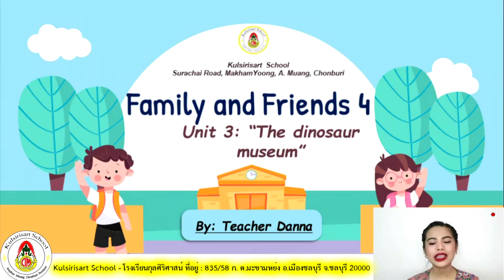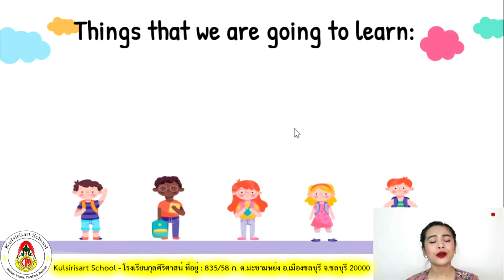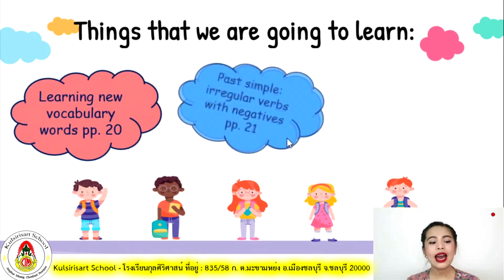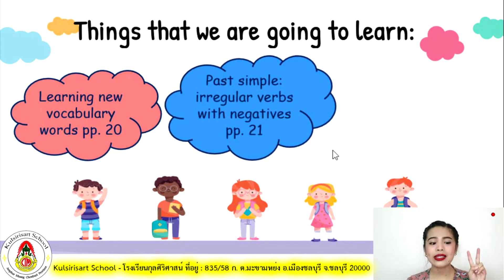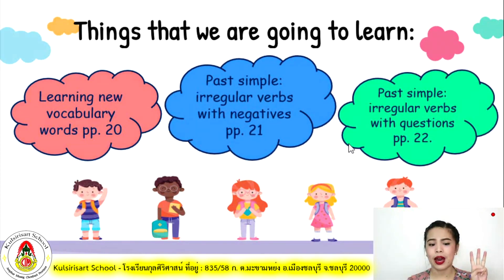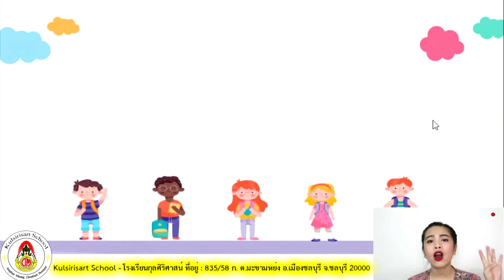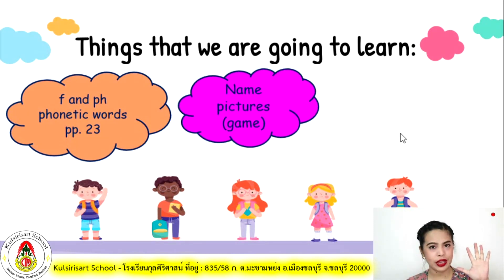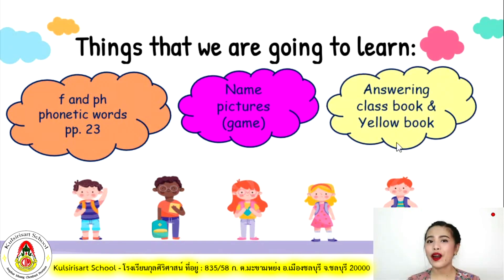I want you to get your family and friends class books. Here are the things that we are going to learn. First, we are going to learn new vocabulary words on page 20. Second, we are going to learn about past simple irregular verbs with negatives on page 21. Third, we are going to learn about past simple irregular verbs with questions on page 24. Fourth, we are going to learn about F and PH phonetic words on page 23. Also, we are going to name pictures through games, and last but not the least, we are going to answer your class books and your yellow books.